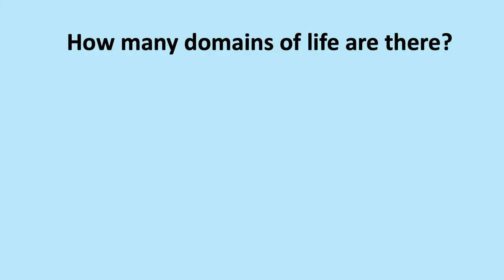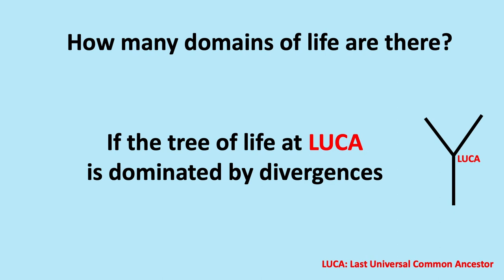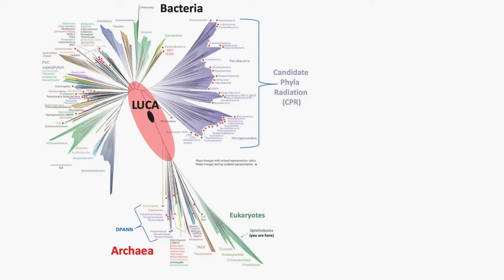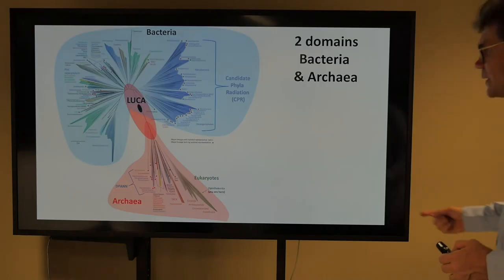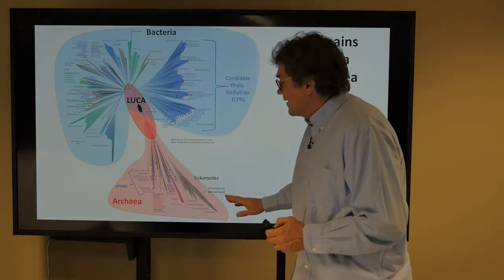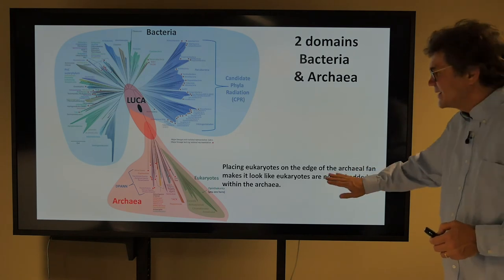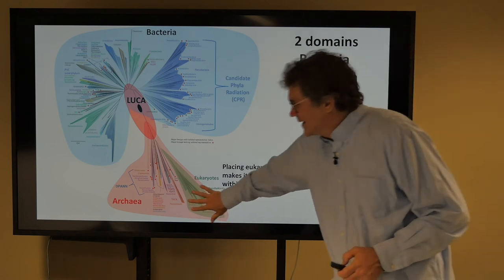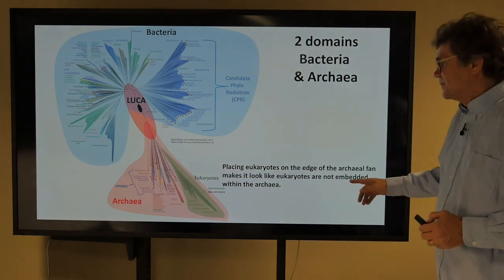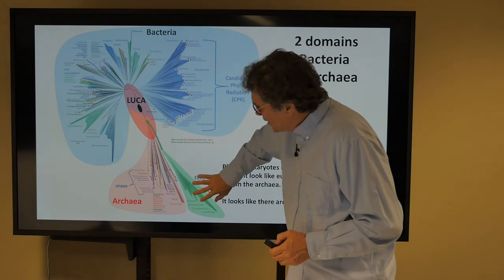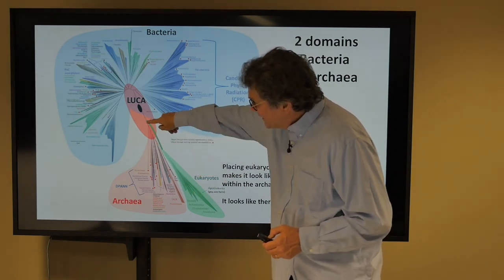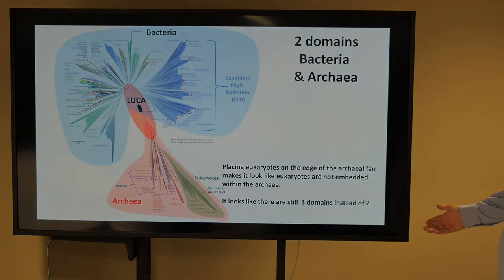How many domains of life are there? If the tree of life at LUCA is dominated by divergences, then there are two domains — one, two. Here's that tree of life again, and here are the two domains: bacteria and archaea. Notice that the eukaryotes are embedded in the archaea. Now, placing the eukaryotes on the edge makes you think maybe they're separate — it makes it look like the eukaryotes are not embedded. But this connection of eukaryotes is here, not deep here. If it were deep, we would have three domains. So it looks like there are still three domains instead of two.